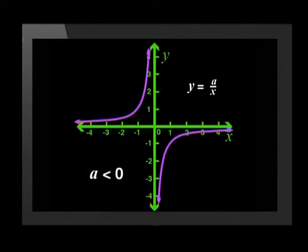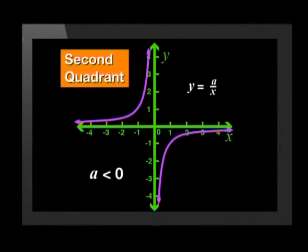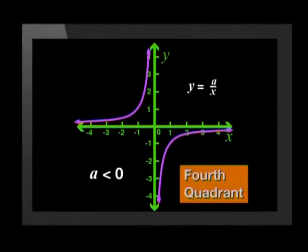We also found that for positive values of a, the graph of y equals a over x has two parts, one in the first quadrant and one in the third quadrant. For negative values of a, the graph of y equals a over x is reflected about the x-axis. It has two parts. This time one part is in the second quadrant and one part is in the fourth quadrant.